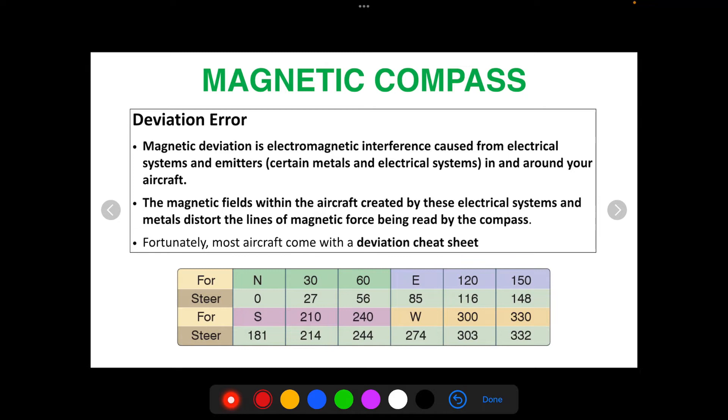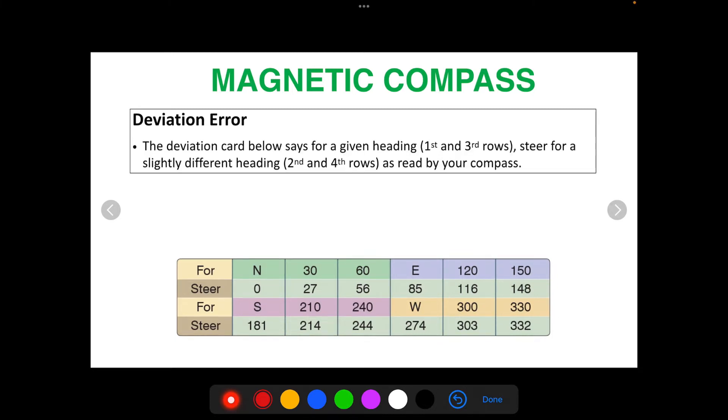Fortunately most aircraft come with a deviation cheat sheet that tells you how to read and correct for deviation error. The deviation card below, so this is the one you're going to find, the example you'll find on the FAA written exam.